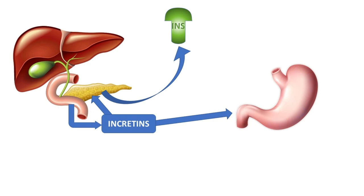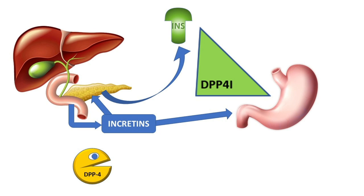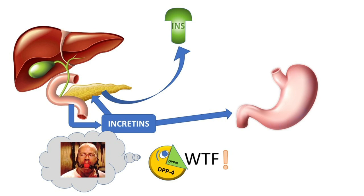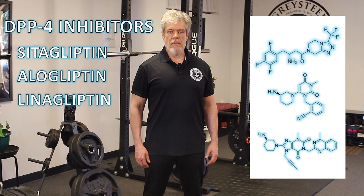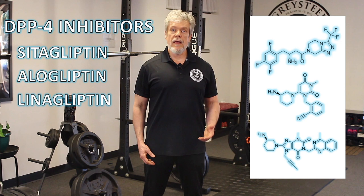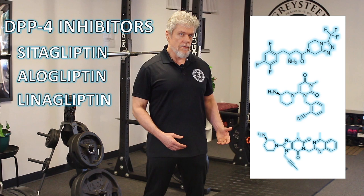Incretins are very short-acting because they're broken down by an enzyme called dipeptidyl peptidase-4, or DPP-4, which terminates their biological effect. Another way to enhance incretin action is by giving a DPP-4 inhibitor — a drug that blocks this enzyme and prolongs incretin activity. DPP-4 inhibitors include sitagliptin, alogliptin, linagliptin, and other gliptins. The side effect profile is similar to incretin analogs and also includes headache, heart failure, and joint pain. Concerns about increased cancer risk remain unproven, but the big advantage is that DPP-4 inhibitors can be taken orally.